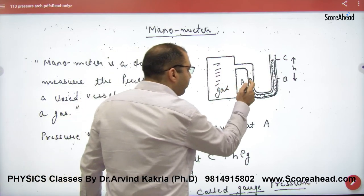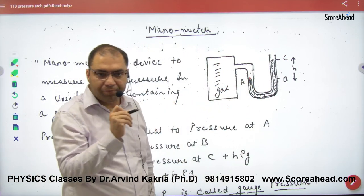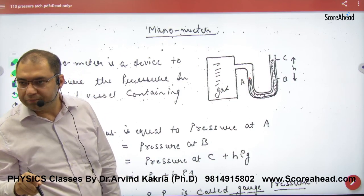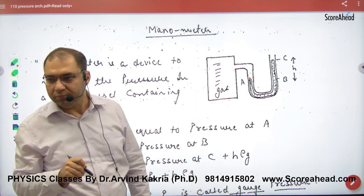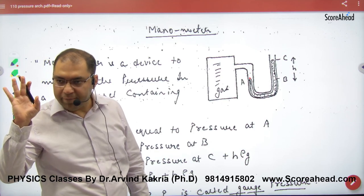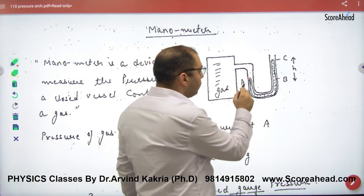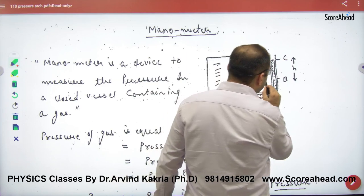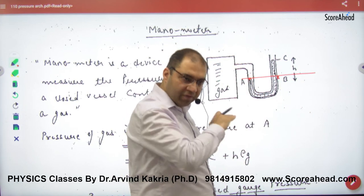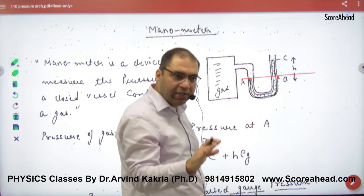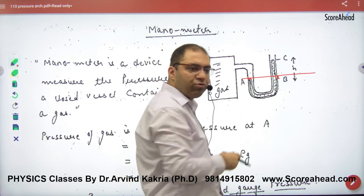In this case, the pressure at point A will be the gas pressure, because what is present there is gas. We draw a horizontal line through points A and B. A and B pressure will be equal, because at the same horizontal level in a connected fluid, pressure is equal.